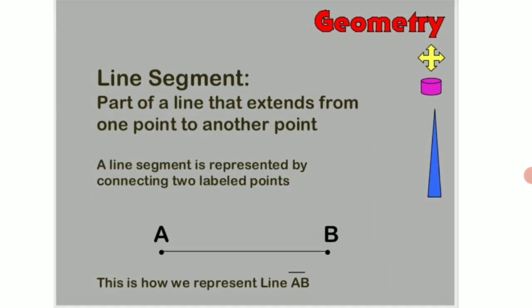Now let us come to what a line segment is. Line segment is a part of a line that extends from one point to another point. A line segment is represented by connecting two labelled points. You can see here children, a line segment is given with two end points as A and B which is represented by a bar on the top.